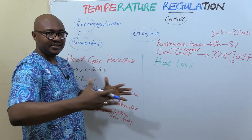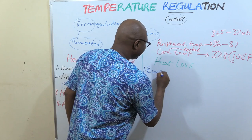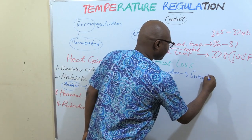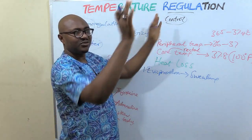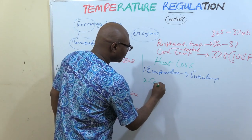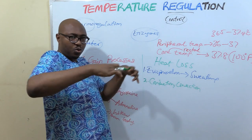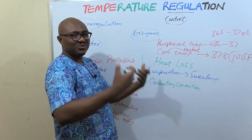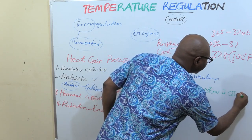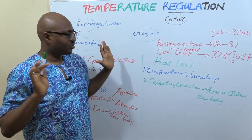Now for heat loss — the things that can make the body lose heat. One of them is evaporation. Evaporation happens from the skin when you sweat; sweating causes evaporation which releases heat into the environment. Related to this is radiation in the opposite sense, plus conduction and convection. These happen when the environment is colder than the body, so the environment draws heat away and reduces the temperature of the body.